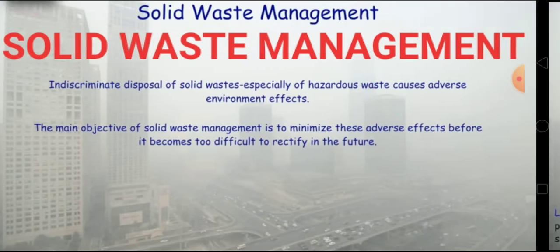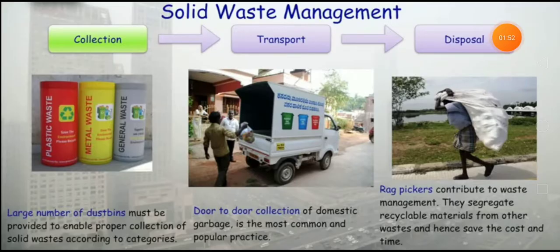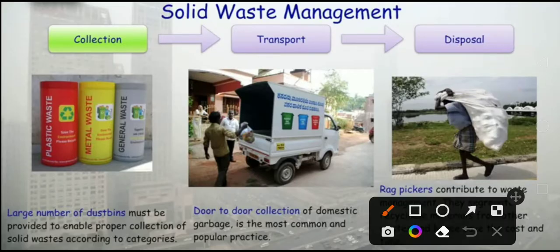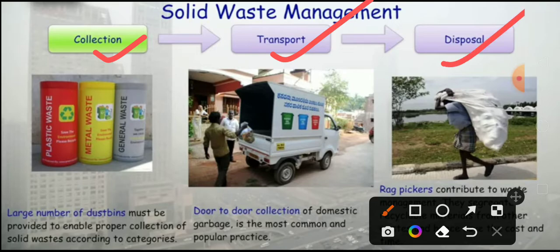Solid waste management contains three main steps: collection, transport, and disposal. First we collect different solid waste, then we transport it, and finally we dispose of it. In collection, a large number of dust bins must be provided to enable proper collection of solid waste according to category.